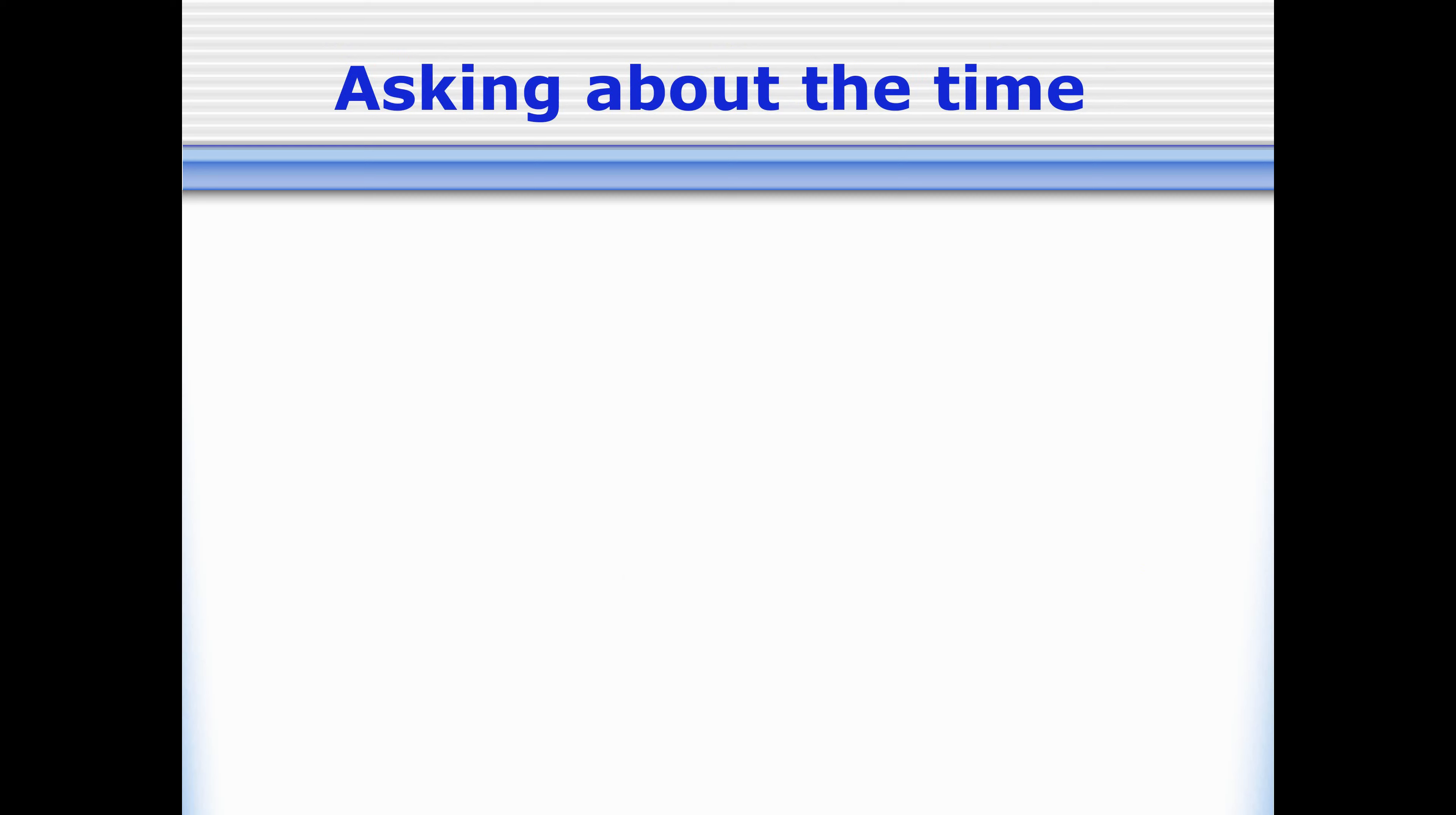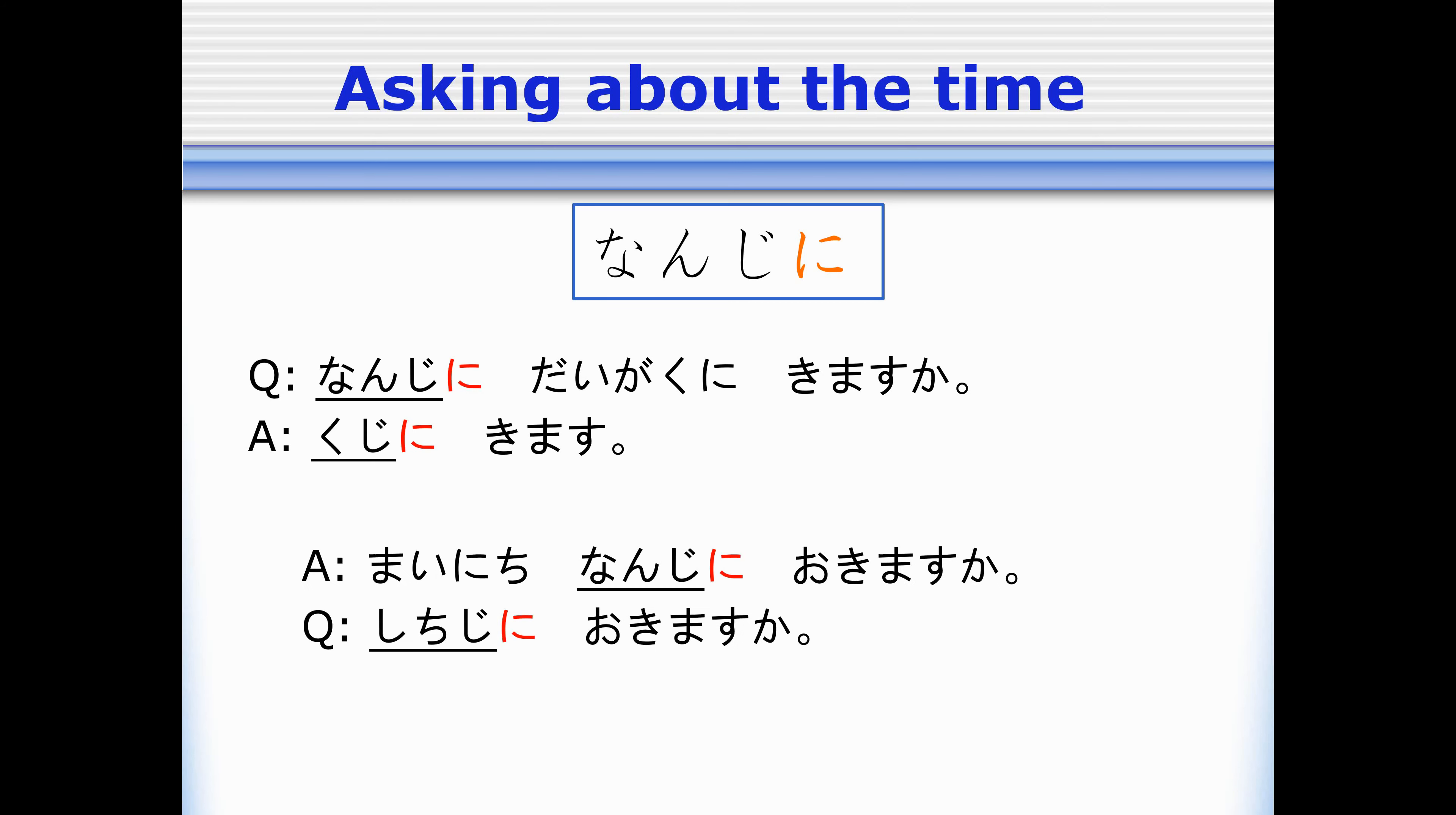Lastly, when we want to ask about the time that someone does something, we already have a question word that means what time. We have nanji. So nanji goes with the particle ni, nanji ni. So in whatever place we would have put the time normally, we're instead going to put this nanji ni. So nanji ni daigaku ni kimasu ka? At what time do you come to the university? Kuji ni kimasu.